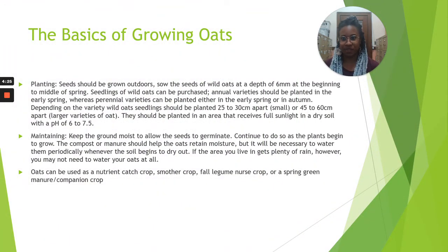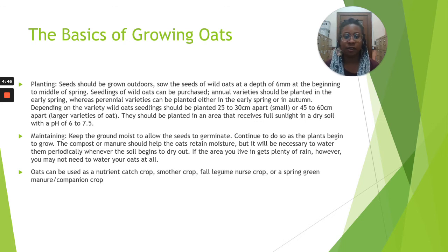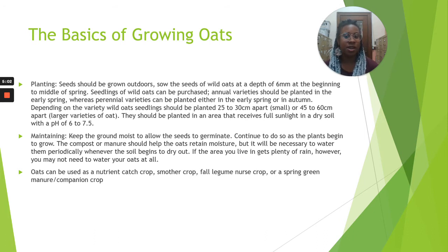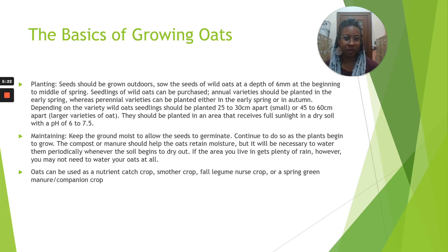The basics of growing oats: when it comes to planting, seeds should be grown outdoors at a depth of six millimeters at the beginning to middle of spring. Seedlings of wild oats can be purchased. Annual varieties should be planted in early spring, whereas perennial varieties can be planted in early spring or in the fall. Depending on the variety, seedlings should be planted 25 to 30 centimeters apart or 45 to 60 centimeters apart. They should be planted in an area that receives full sunlight and dry soil with a pH of 6 to 7.5. Keep the ground moist to allow seeds to germinate and continue to do so as the plants begin to grow.